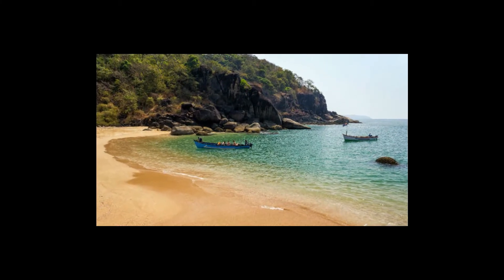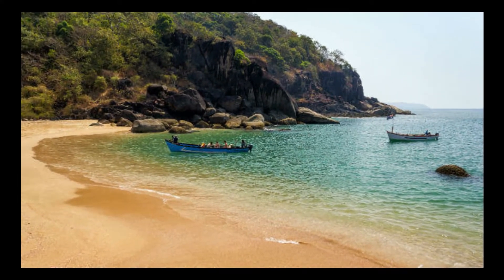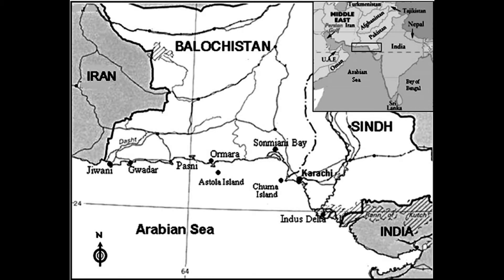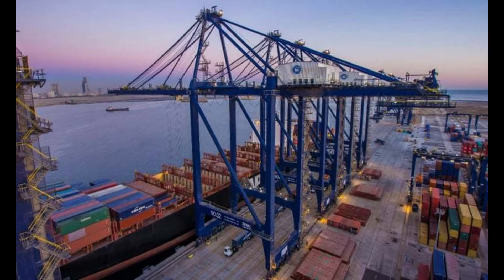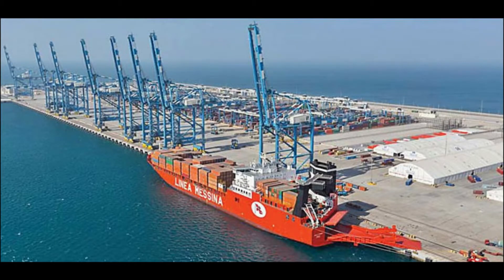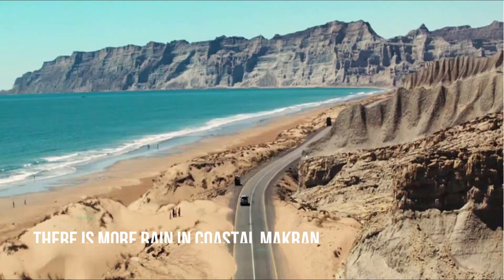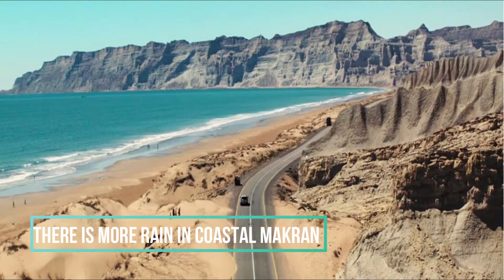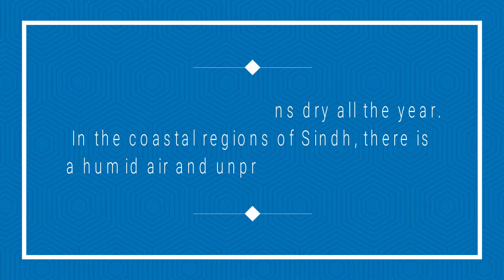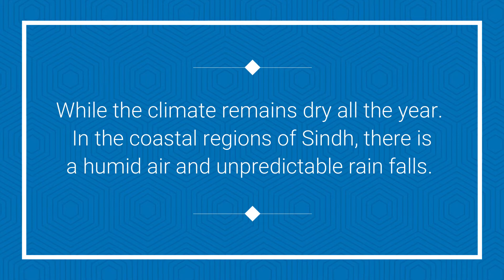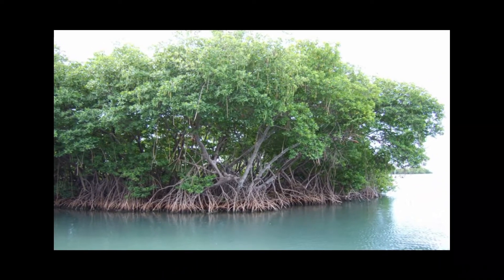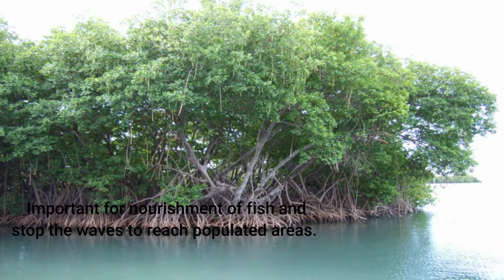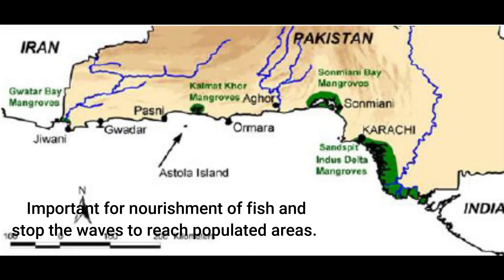Ab am aate hain coastal regions of Pakistan. The coastal region expands from the border of India in Sindh to the west in Iran. It consists of several ports; Karachi is one of the oldest ports, others include Port Qasim and Port Gwadar. There is more rain in coastal Makran while the climate remains dry all year in the coastal regions of Sindh; there is a humid air and unpredictable rainfalls. There are thick forests of mangrove at the eastern side of River Indus that are important for nourishment of fish and which stop the waves from reaching populated areas.